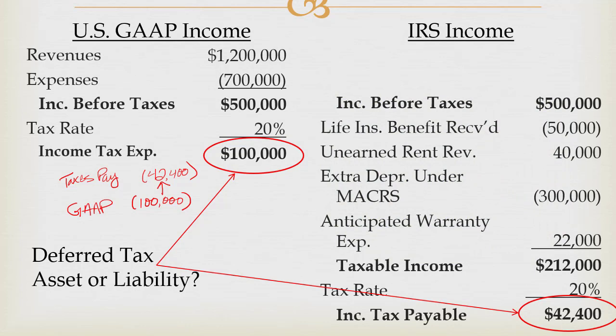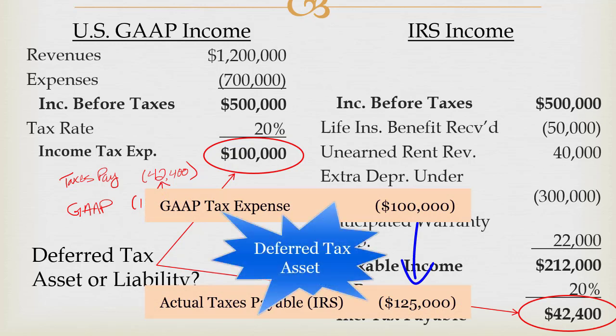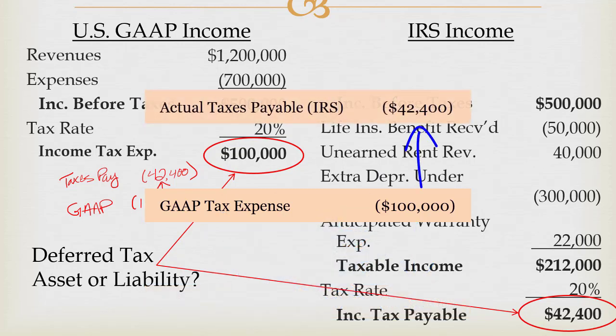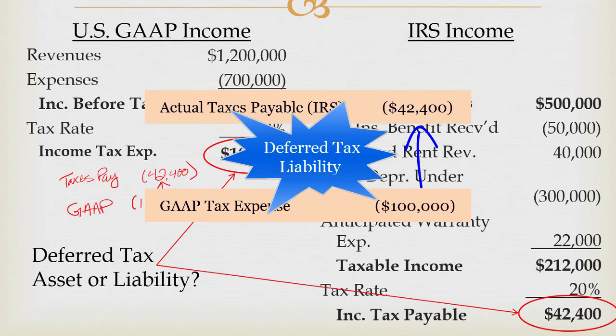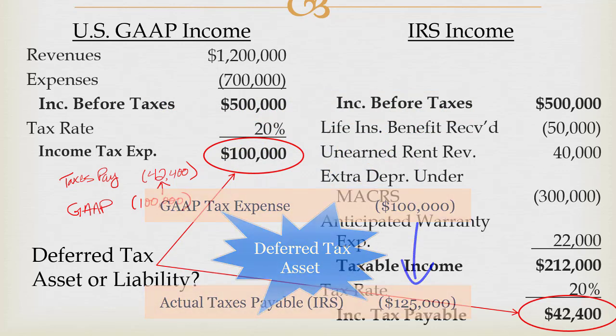If the taxes were lower — meaning I was paying more than I thought I should under GAAP — then I have a deferred tax asset, because I'm paying more now and will pay less later. So just looking at where taxes are versus GAAP: if I go up it's a liability because I'm paying less now and more later; if I go down I'm paying more now and less later, so that's an asset.